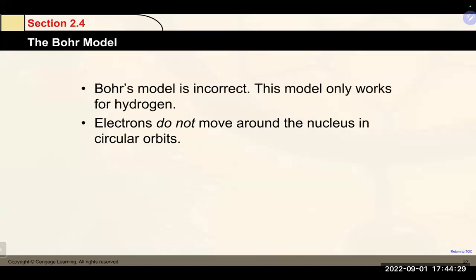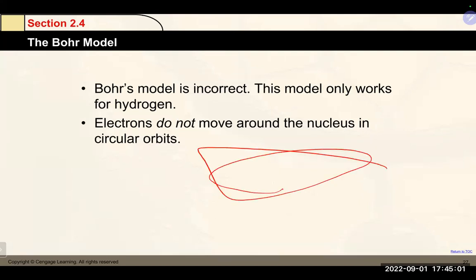Bohr's model is incorrect beyond hydrogen — electrons do not move around the nucleus in circular orbits. There's no good way to know exactly how an electron is moving; the more you know about how it's moving, the less you know about its location. This is Heisenberg's uncertainty principle. Electrons move pretty much randomly about the nucleus, though there is an attraction to the positively charged nucleus. Because of this attraction, electrons exhibit wave-like functions — held like a string on a guitar to the nucleus but moving in a wave-like pattern.